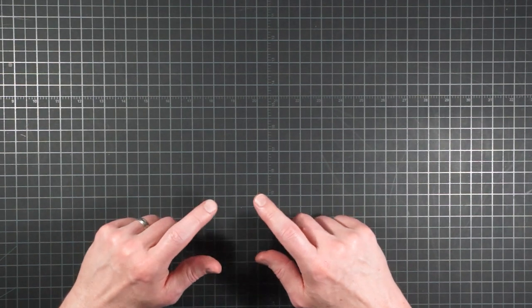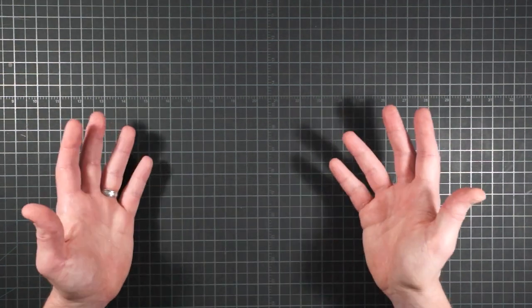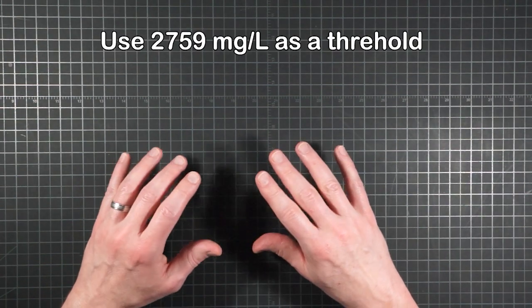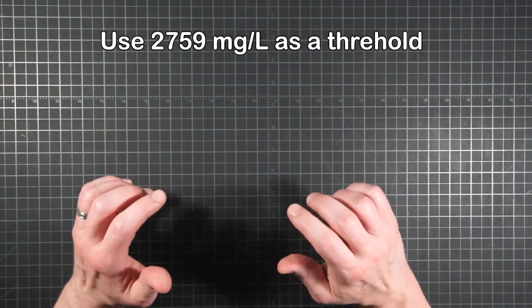You can, of course, choose to mix any combination of packets and water volumes to make the concentration of your preference. Use the threshold of 2759 milligrams per liter for gastrointestinal security.